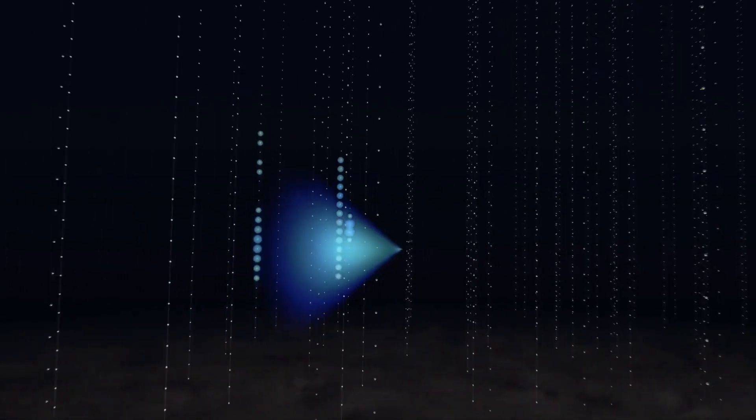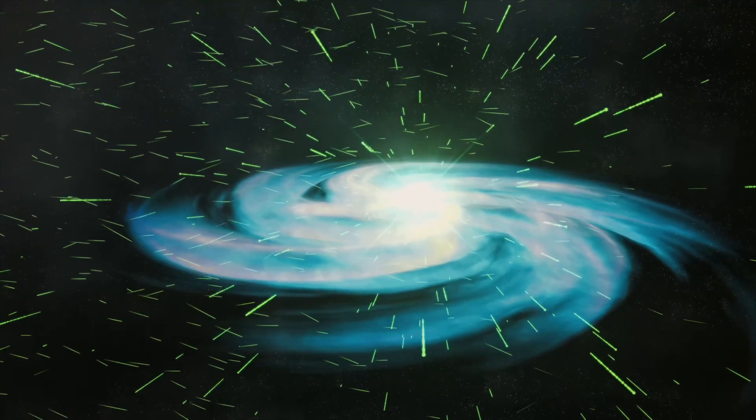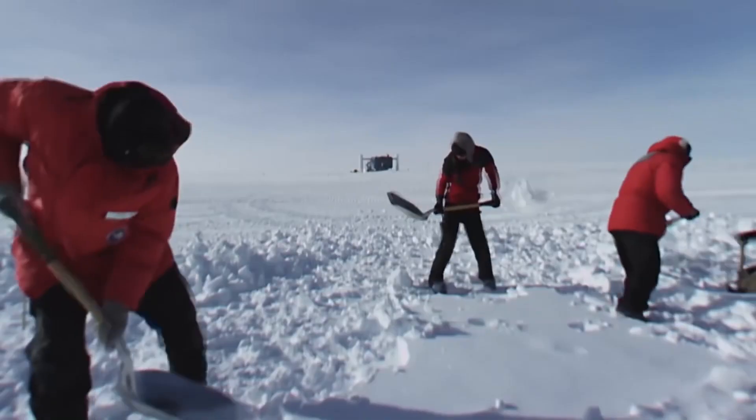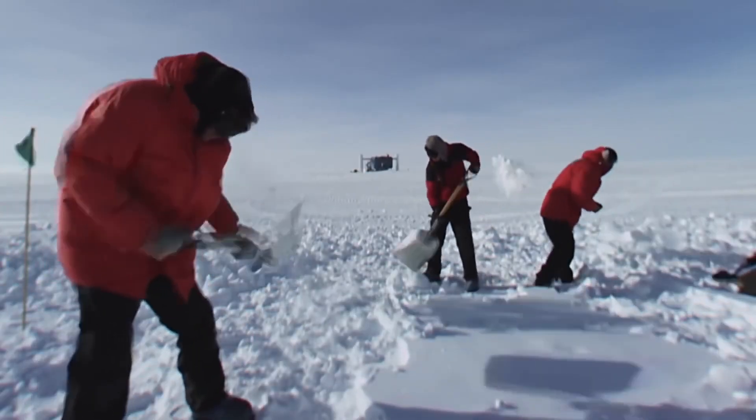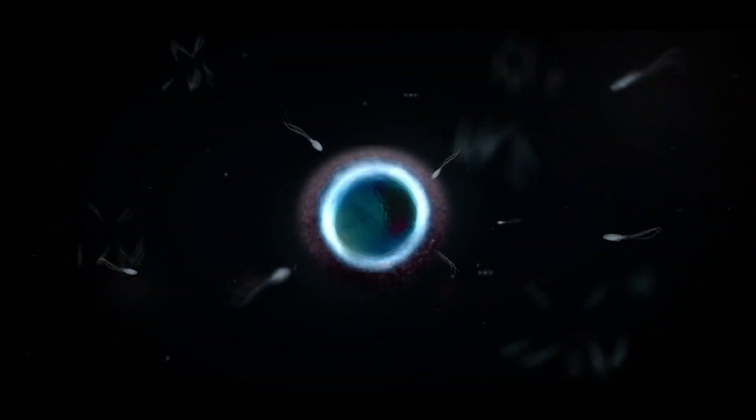According to the team, there are three possibilities for what they saw. There may have been an astrophysical source for these particles that astronomers simply are not aware of yet. There could have been a flaw in either the detector or the team's interpretation of the data they received from the detector, or something remarkable, exotic, and beyond the standard model occurred.